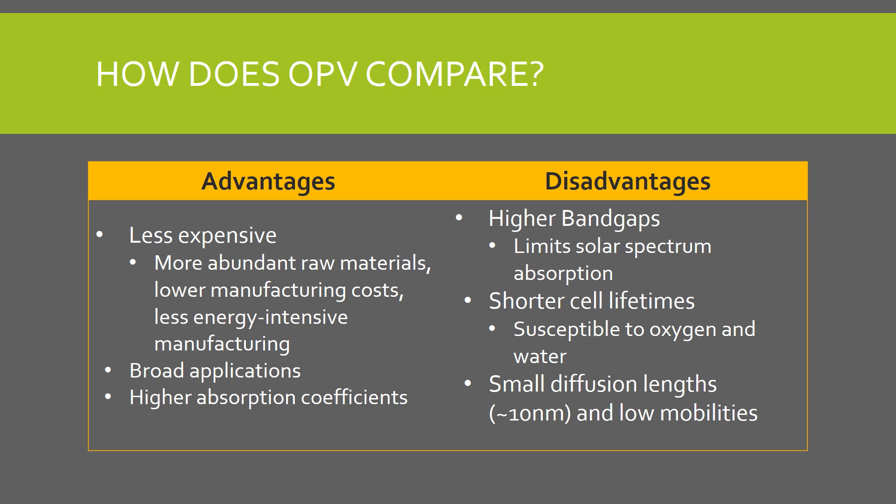However, there are some drawbacks. Organic cells generally have higher optical band gaps than silicon cells, around 2 electron volts instead of 1.1. These higher band gaps limit the amount of light that these cells can harvest from the solar spectrum, because only photons with high enough energy can be absorbed. OPV cells are also less durable than traditional cells, because they are generally thinner and degrade more easily. Also, because organic cells have small exciton diffusion lengths and low carrier mobilities, these cells usually have efficiencies that are much lower than their counterparts.